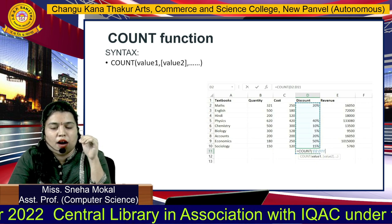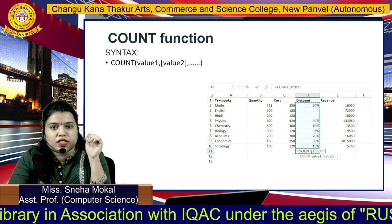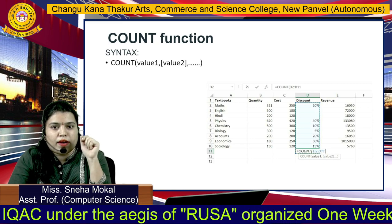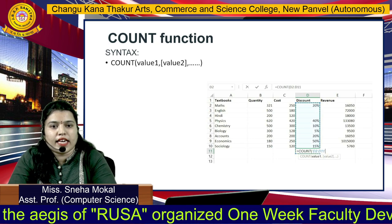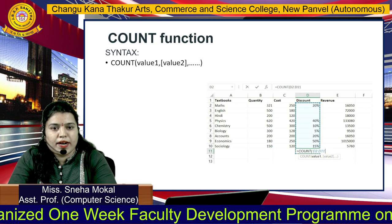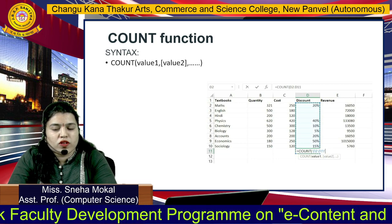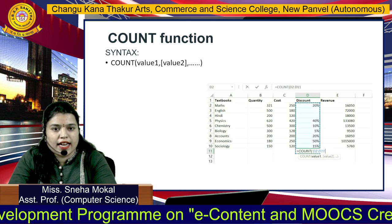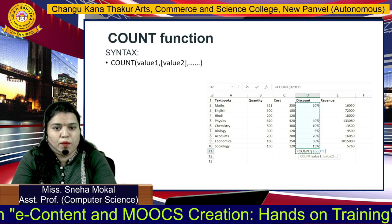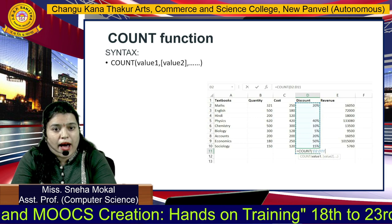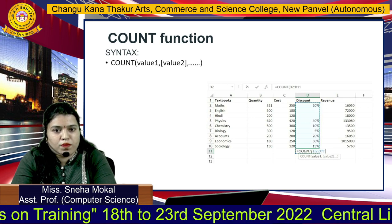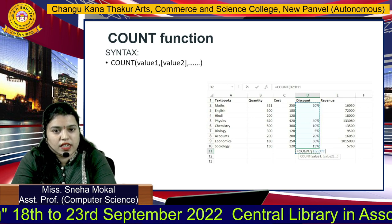तो इसके लिए Excel ने आपको functions provide किये हैं. जब हम function use करते हैं, तो हमें compulsory equal to symbol डालना पड़ता है. अभी देखो मैंने वो image डाली है, उसमें हमने function लिखा है — equal to count. जब आप equal to count लिखोगे, तब आपको कौन से parameter pass करने हैं वो suggestion मिलेगा. जो भी round bracket में रहते हैं उसे parameter कहा जाता है, और जो भी square bracket में रहते हैं वो optional कहा जाता है. यहाँ पर आप multiple values insert कर सकते हो.